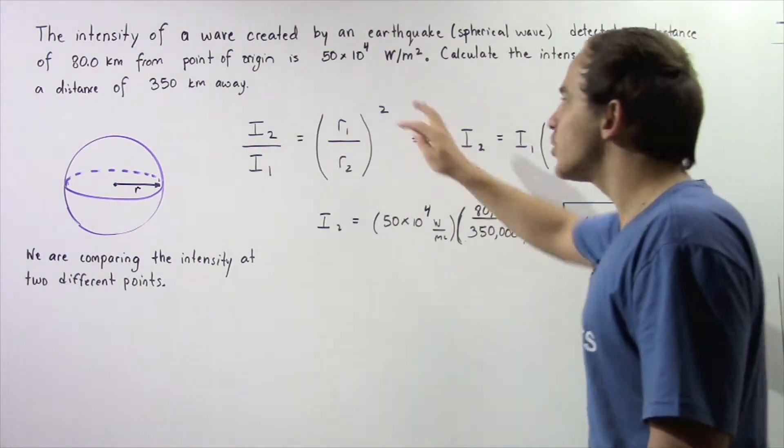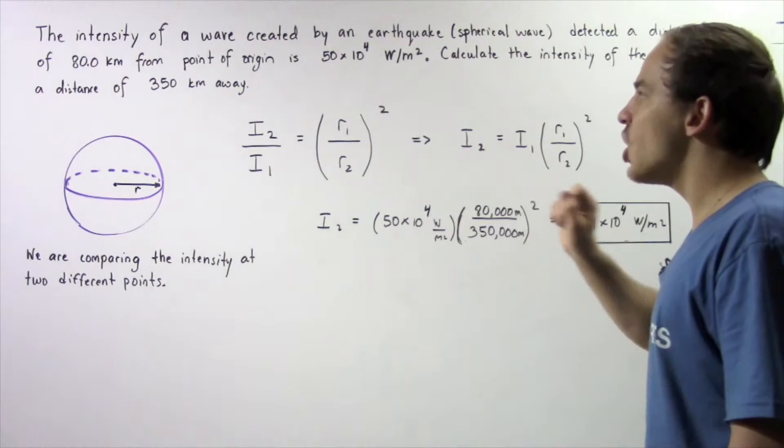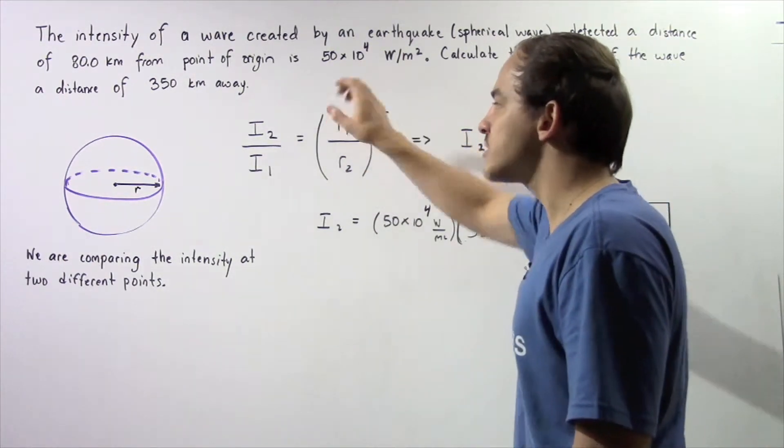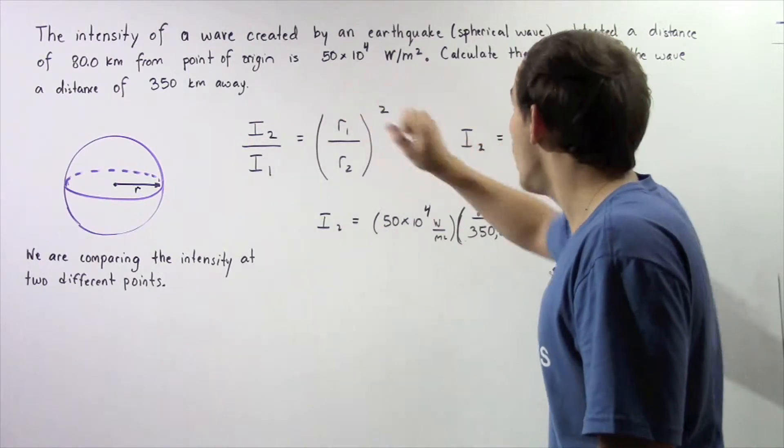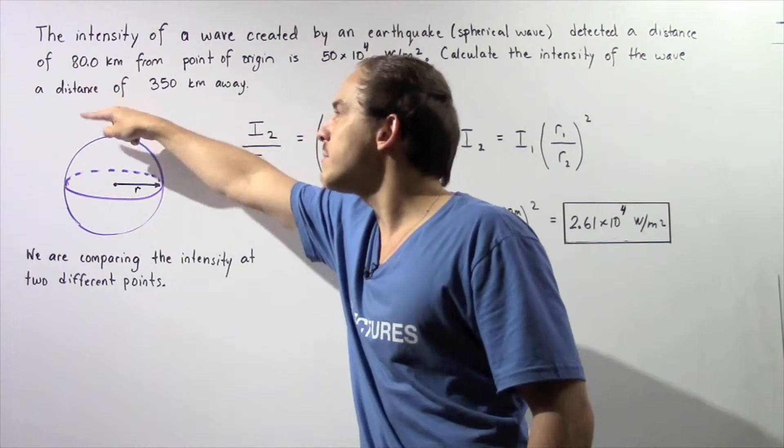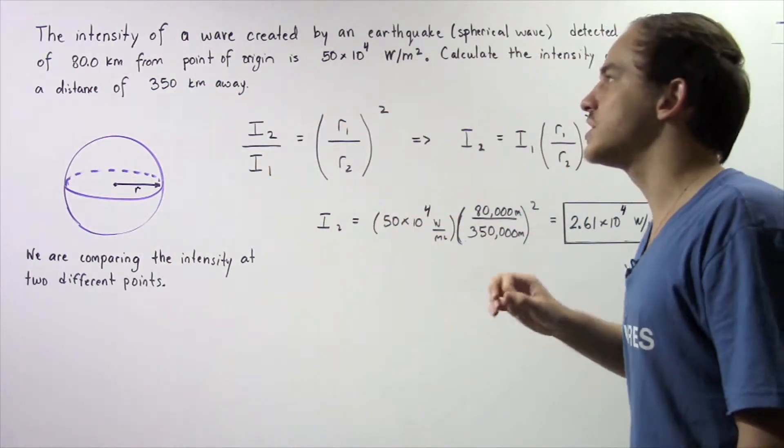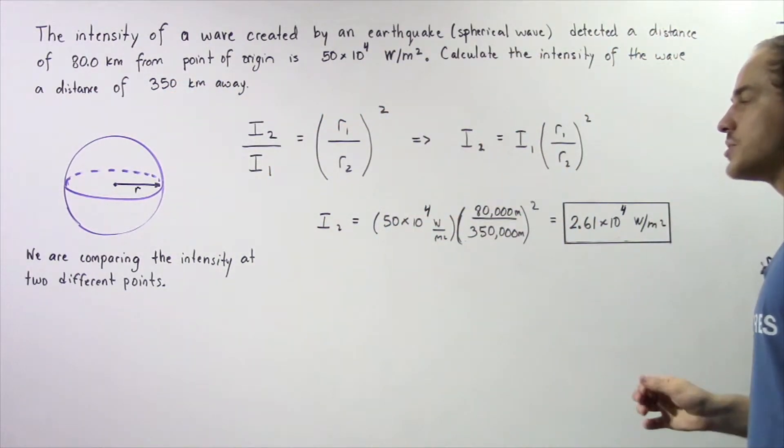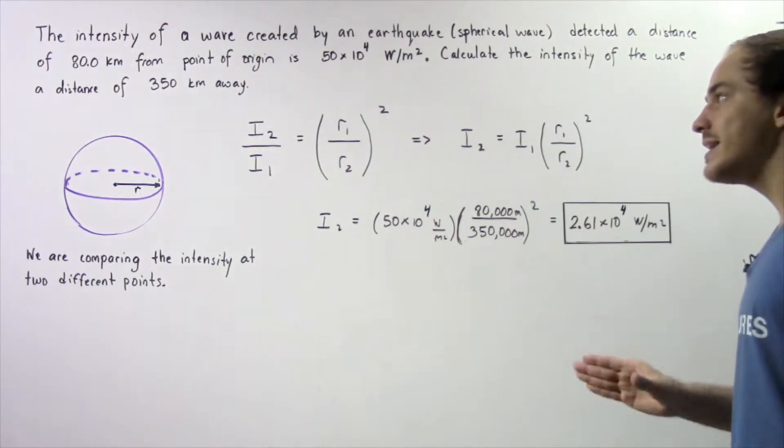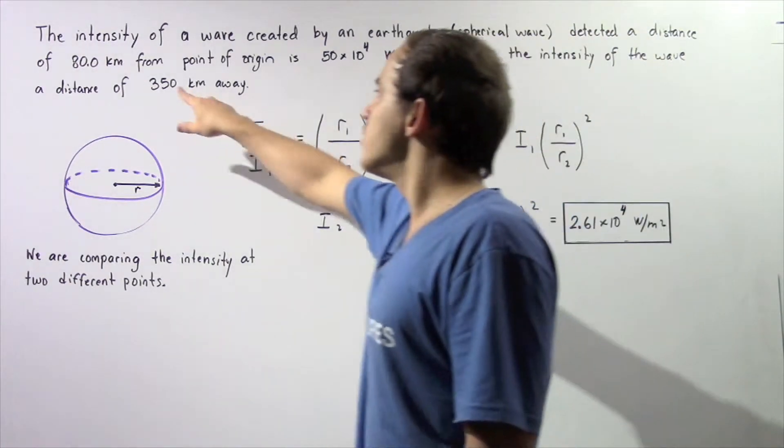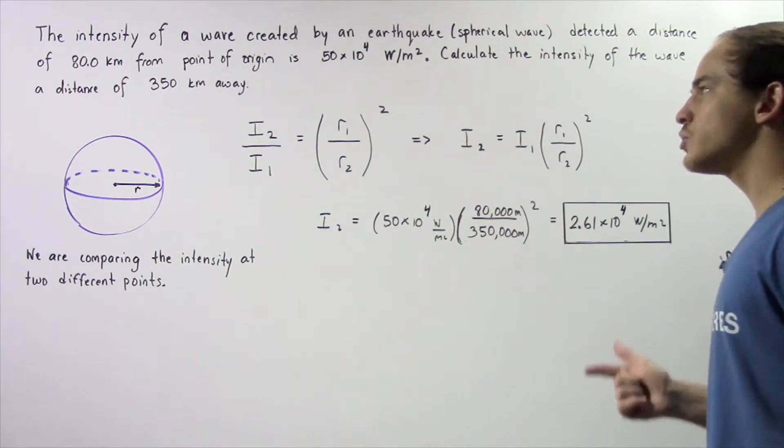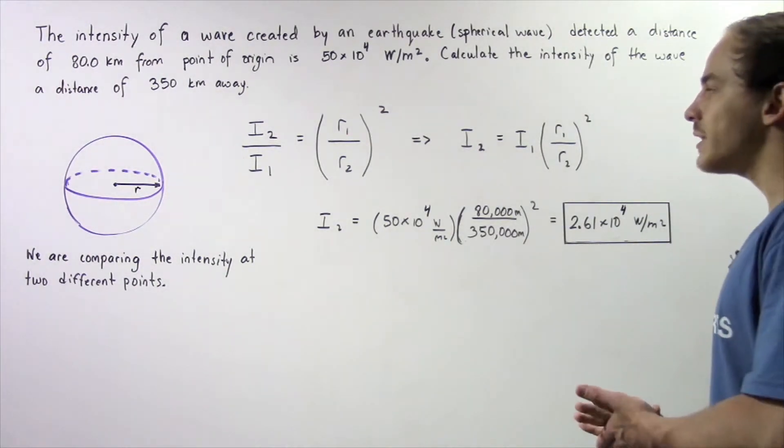Now, we know what the radius at point 1 is and we know what the radius at point 2 is. The radius of our spherical wave at point 1 is 80 kilometers, so 80 kilometers times 1000 gives us 80,000 meters. What about the radius at point 2? The radius at point 2 is simply 350 kilometers times 1000 gives us 350 meters.